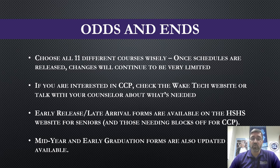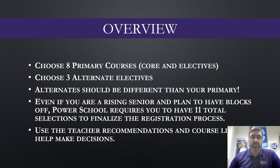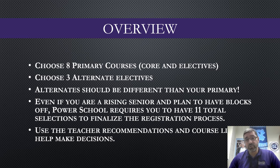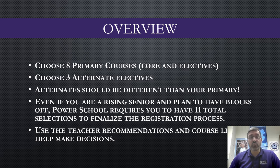To review: you'll choose eight primary courses — your core classes and top choice electives — plus three alternate electives. I cannot stress enough that your alternate choices need to be different from your primary choices. A lot of students think that putting a selection in both primary and alternates makes them more likely to get it — that is definitely not true. PowerSchool tries to schedule primary courses first, and only if it can't schedule an elective will it default to the alternates. So if you have the same course in both, all you're doing is limiting your choices. Please choose 11 different courses.